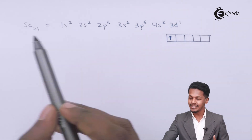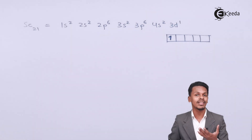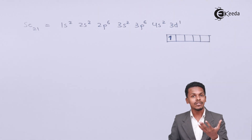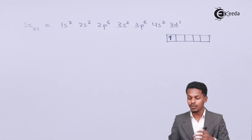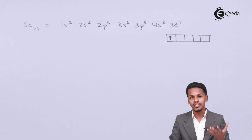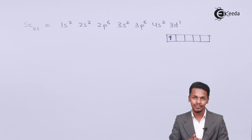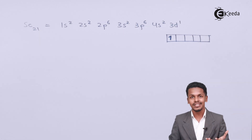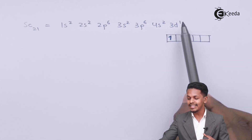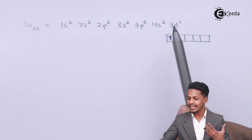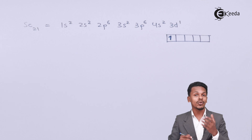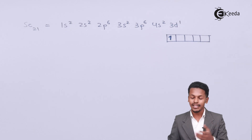Since scandium's d sub-shell consists of only one electron, it is incompletely filled, and that is why scandium is known as a transition element. Even in its oxidation states of +2 and +3, this d orbital still retains one electron, confirming it as a transition element.